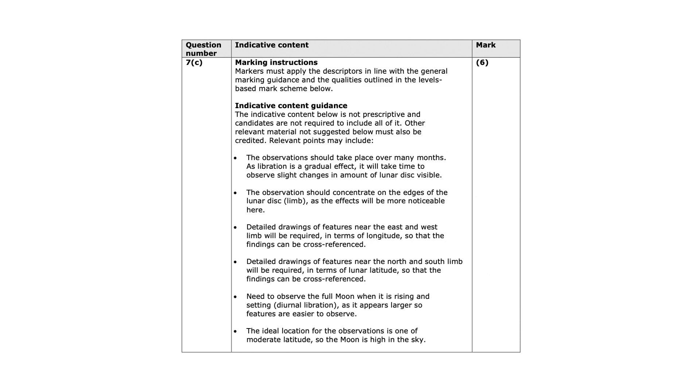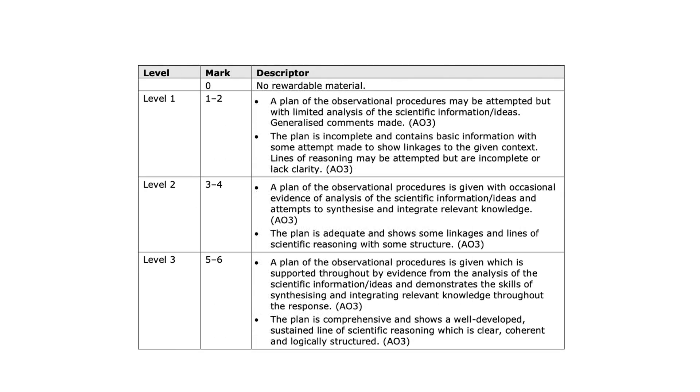So, for zero marks, there's no rewardable material at all with this. For level one, they're talking about a plan, which should be attempted, but there's only limited analysis. And there are only general comments being made. The plan is also incomplete, and there's only basic information, and there's some linkages to the given context. So, we should be talking about moon, libration, that type of thing. But this is incomplete, and there's not much clarity in this. Level two is there's occasional evidence of analysis of scientific information and ideas that attempts to synthesize and integrate the relevant knowledge. So, here, basically, what they're saying is that there's an attempt at being relevant and including the relevant information, but it isn't fully there. And it's adequate. And there is some link of these ideas with some structure, but it's not, again, it's not fully thorough.